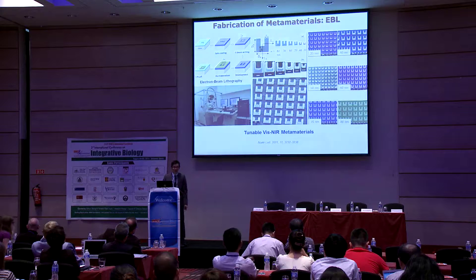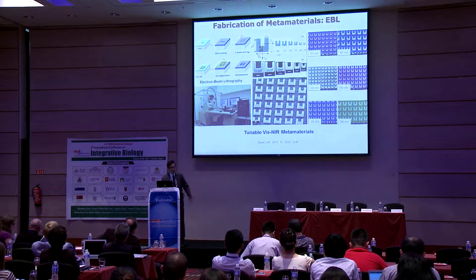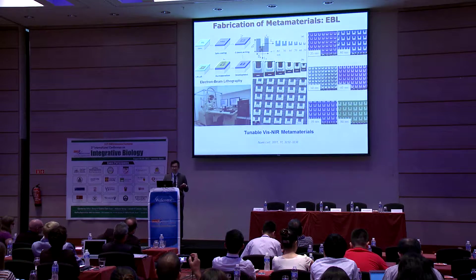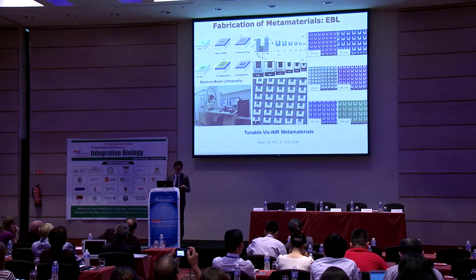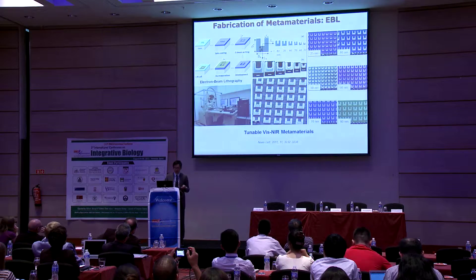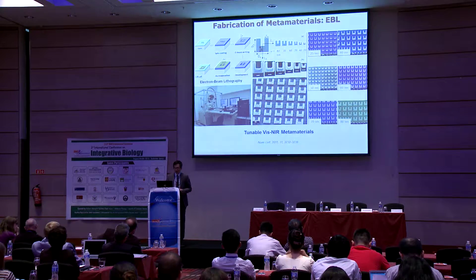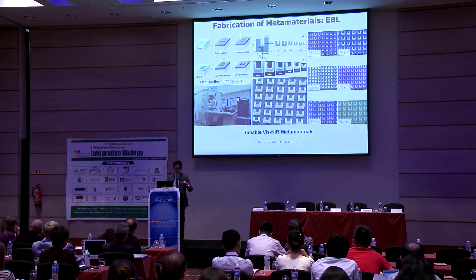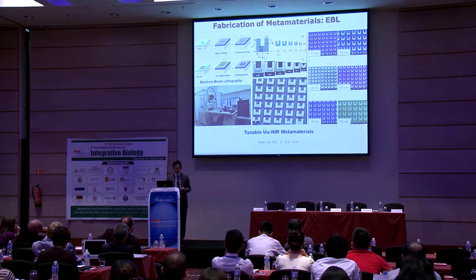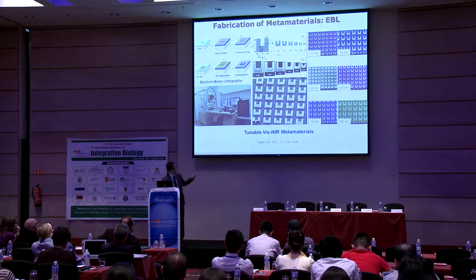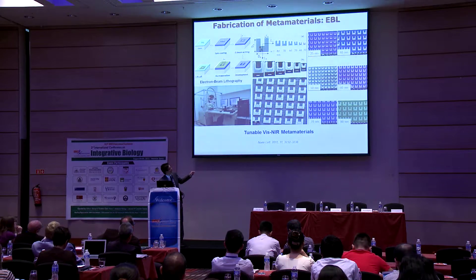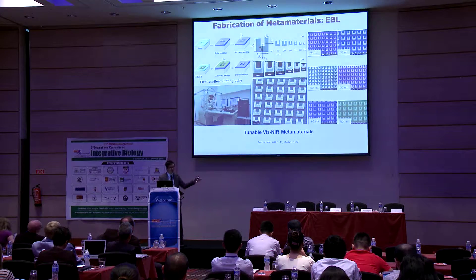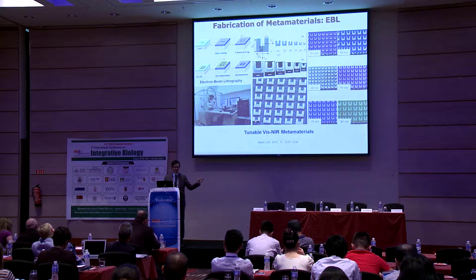For fabrication of the metamaterial, one of the most powerful techniques is electron beam lithography. This involves first depositing electron-sensitive resist — a polymer layer — onto the substrate. Then we expose the resist to the electron beam, and after development and metallic deposition, we obtain the desired nanostructure. Using EBL, we can fabricate split-ring resonators with sizes down to 25 nanometers, which we believe is the smallest mode size for the split-ring resonator. Of course we can make something bigger; however, when we reduce the size, we can push the optical response to higher frequencies.